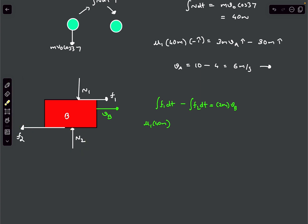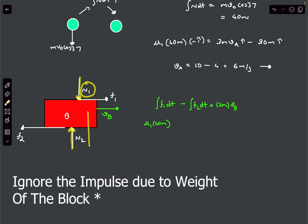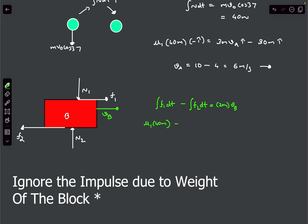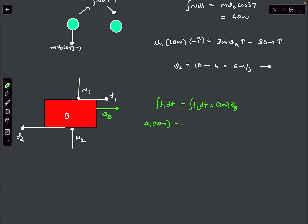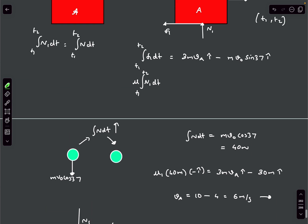Using similar logic, integral of N2 dt equals integral of N1 dt because we can ignore the weight of the block during collision. So this becomes mu1 times integral of N1 dt, which we can subtract.